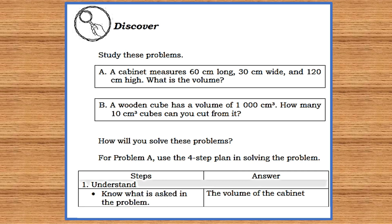Know what is asked in the problem. The answer is the volume of the cabinet. Know the given facts. Here are the givens: length is equal to 60 cm, width is equal to 30 cm, height is equal to 120 cm.